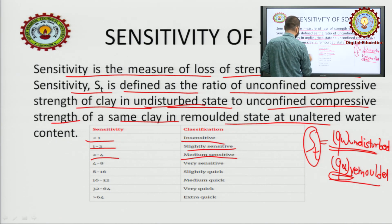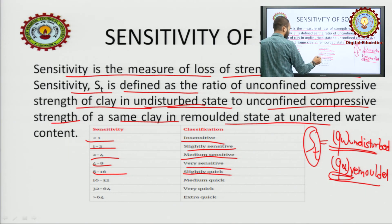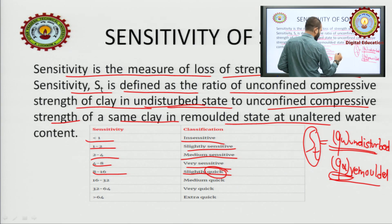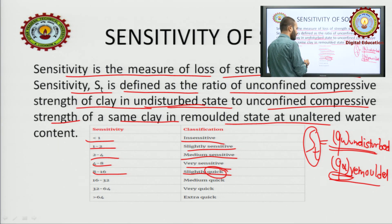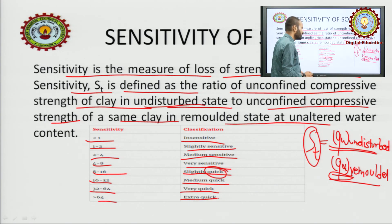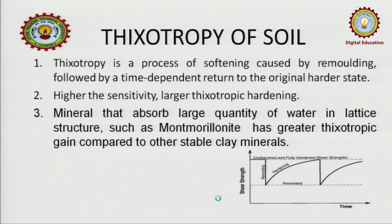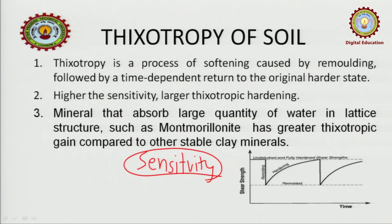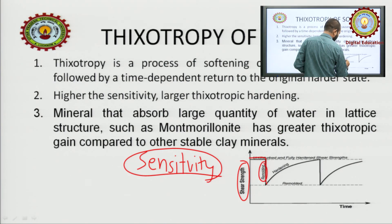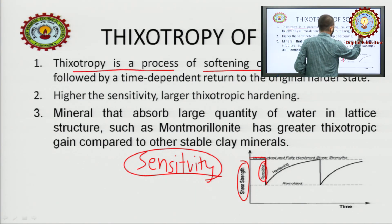Unconfined compressive strength (qu): an experiment to find how much load a soil specimen can resist. A standard cylindrical soil specimen is made and a compressive load is applied. The unconfined compressive strength is defined as the ultimate load per unit cross-sectional area that the specimen can take under compression without any lateral pressure. It is 'unconfined' because we are not confining the specimen laterally.